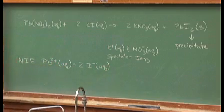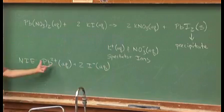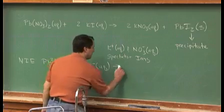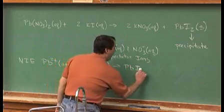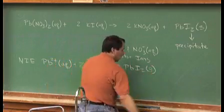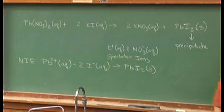The iodides are aqueous. They're floating around in solution. They were put in there with potassium, but now they get together and form the solid PbI2(s), the solid lead iodide.